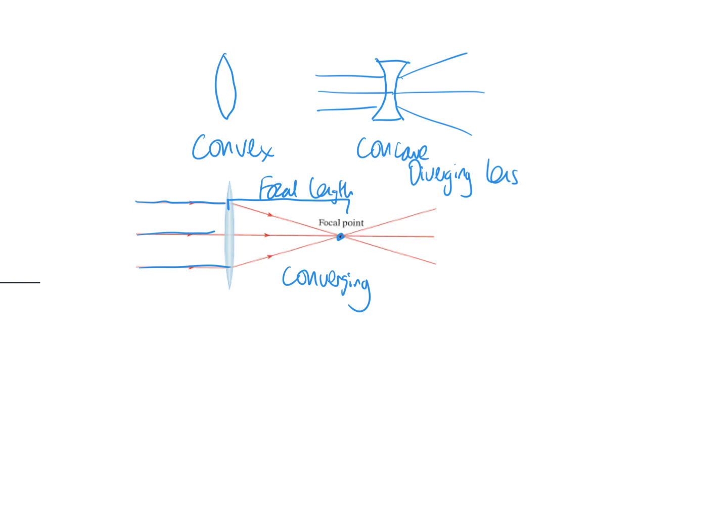Now you need to be able to do some ray diagrams for the convex lens. This line here represents the lens. You might be given the focal point or you might have to mark it on. There's also a focal point on the other side, the same distance away. You can measure that distance with a ruler and mark it on the other side as well.